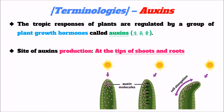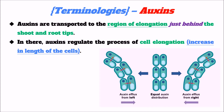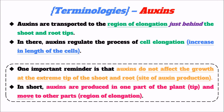In this chapter, we learn about a plant hormone called auxins. This group of plant hormones is responsible for regulating plant growth. The site of auxin production is at the tip of the shoot and the root. After auxins are produced at the tip, they are transported to the region of elongation, which is just behind the tip. Auxins regulate the process of cell elongation, increasing cell length as primary growth. As a hormone, auxins do not exert their effect at the tip where they are produced, but at the region of elongation.